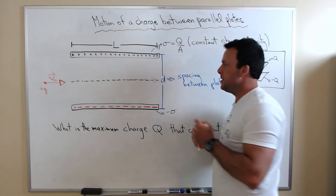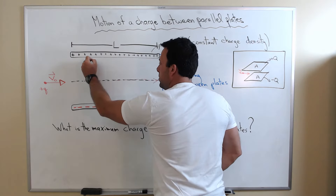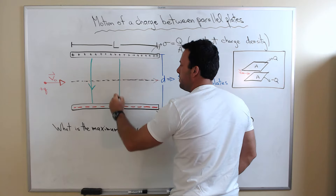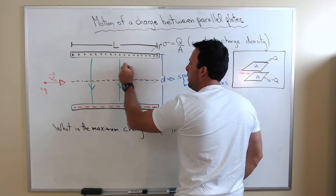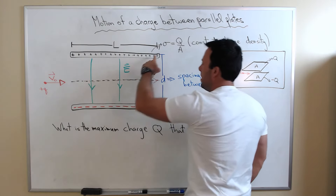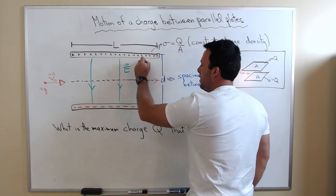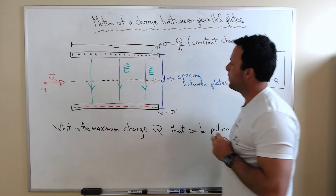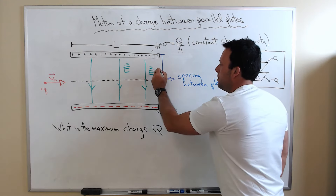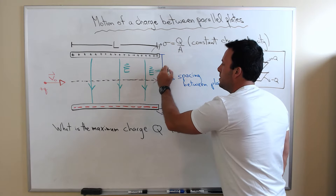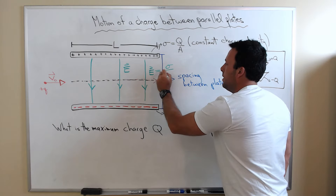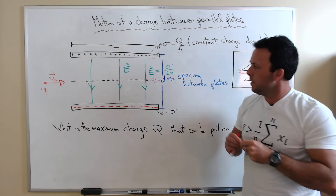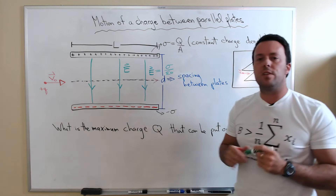One thing you should know is that the field between the plates goes from the positive to the negative plate. If we neglect things going on at the edges, the field between the plates is uniform, and its magnitude is simply equal to sigma divided by epsilon zero.